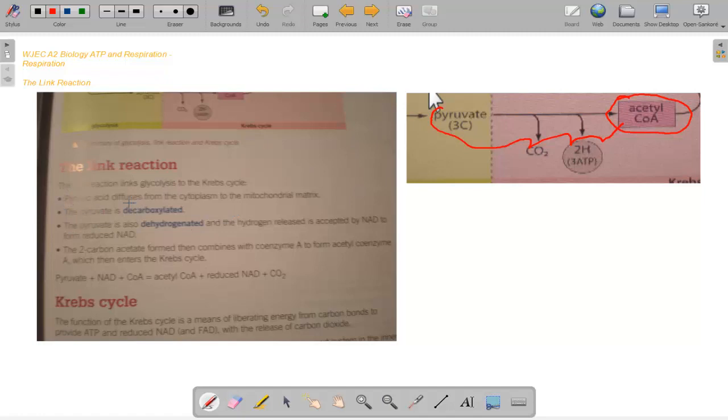So link reaction. Pyruvic acid diffuses from the cytoplasm to the mitochondrial matrix. The pyruvate is decarboxylated. The pyruvate is also dehydrogenated, and the hydrogen released is accepted by NAD to form reduced NAD again. The two carbon acetate formed then combines with coenzyme A to form acetyl coenzyme A, which then enters the Krebs cycle. So the reaction we need to remember for this is pyruvate plus NAD plus coenzyme A makes acetyl coenzyme A, which is our important molecule we need, reduced NAD and CO2. Reduced NAD is our hydrogen acceptor.